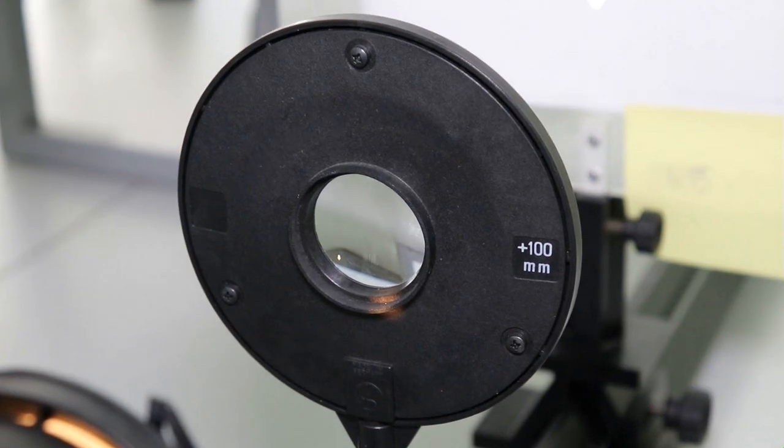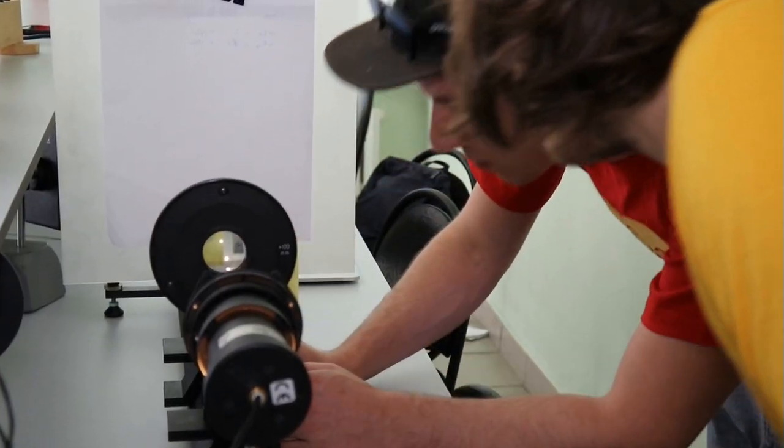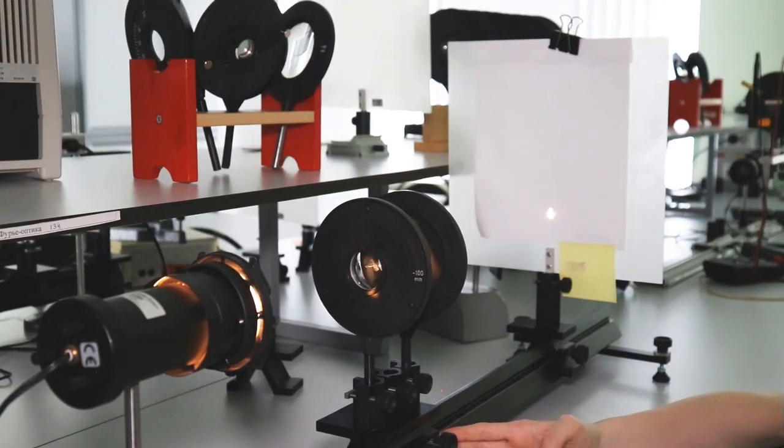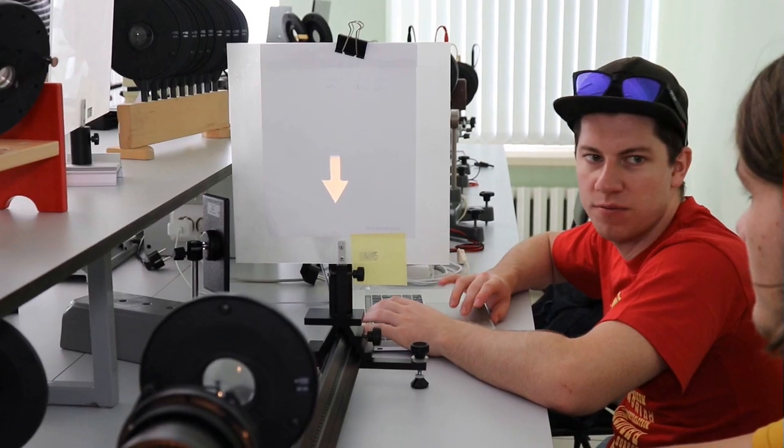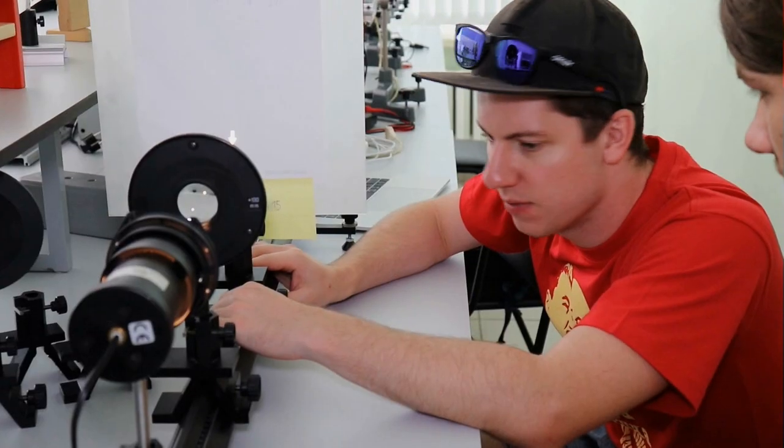Using the lens equation we can determine the focal length of the system. When the distance between object and image is big enough, then two focusing positions exist for the lens.